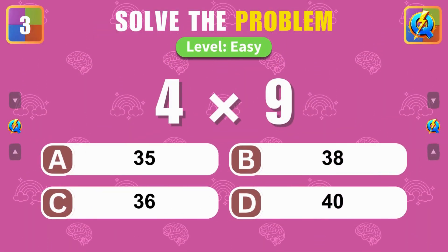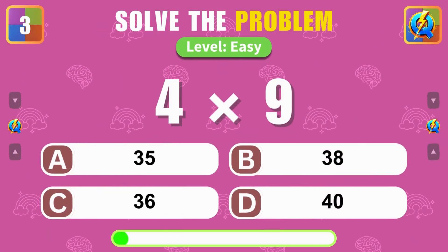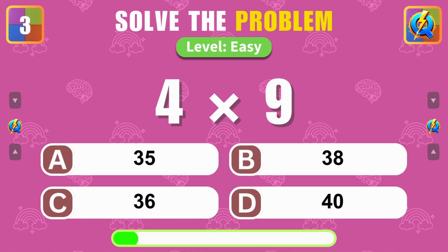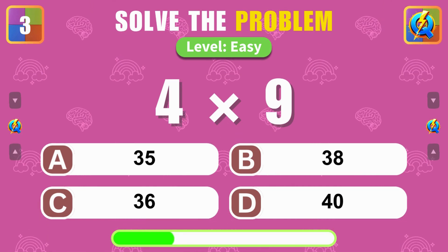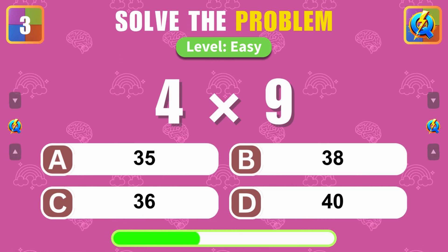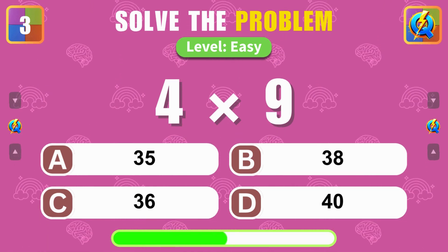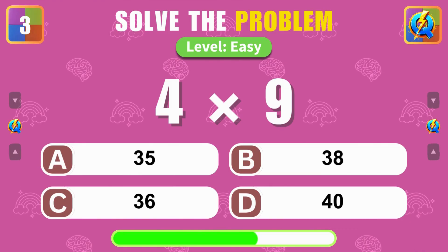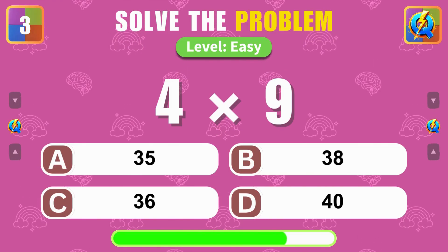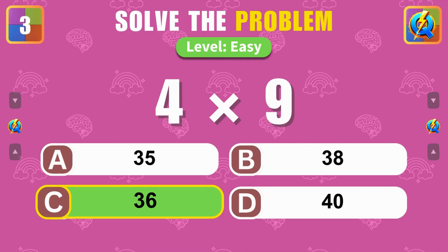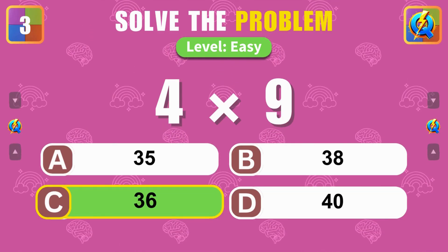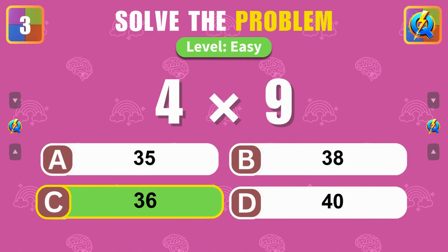What is the result of 4 times 9? Excellent. The answer is 36.